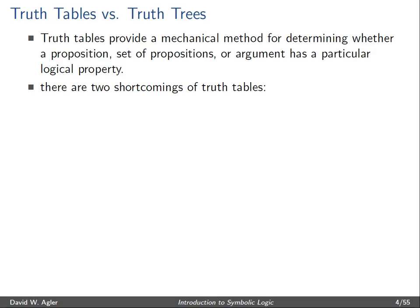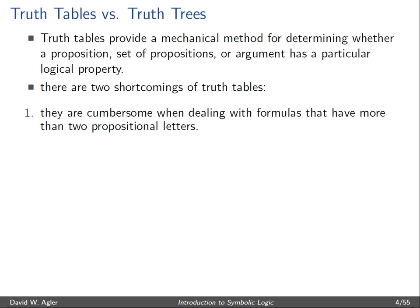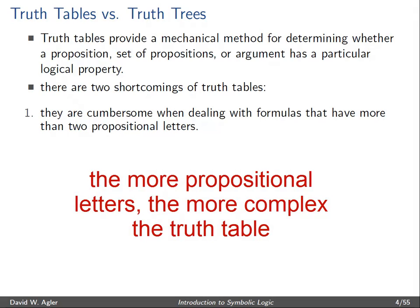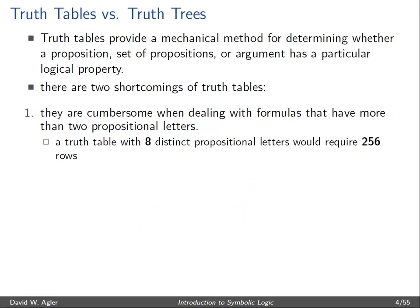Now there are two shortcomings of truth tables. The first is that truth tables tend to be cumbersome when we're looking at arguments or sets of propositions or formulas that have more than three propositional letters. The reason is because truth tables become increasingly complex with the number of propositional letters that are found in them. For example, a truth table with eight distinct propositional letters, A, B, C, D, and so forth, would require 256 rows. Now this would be a humongous truth table.